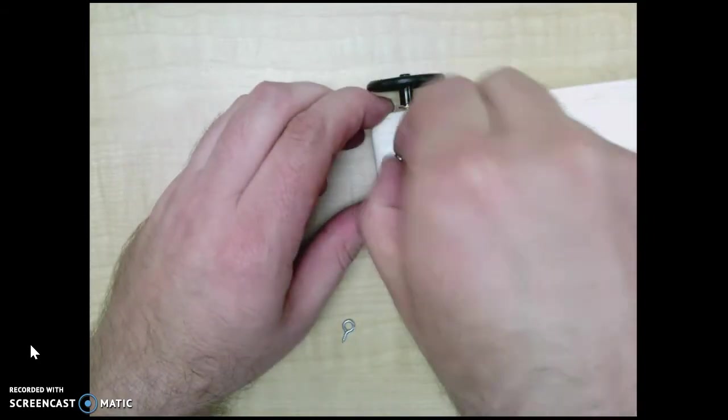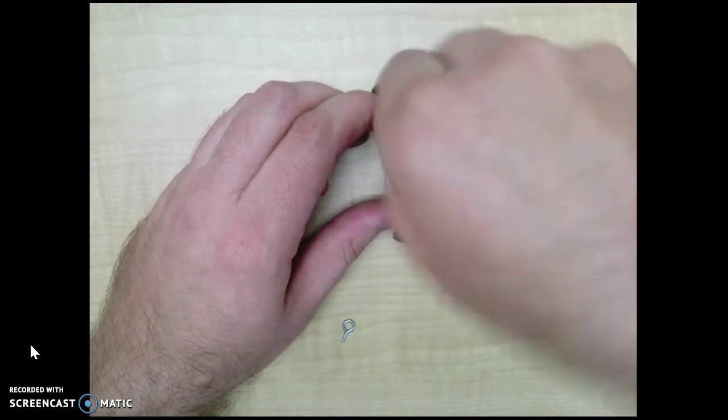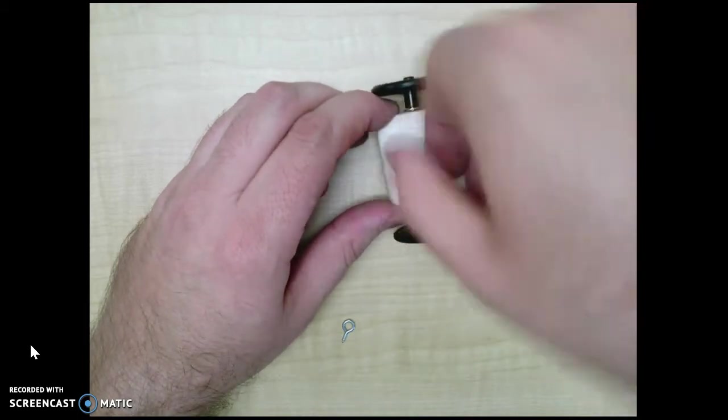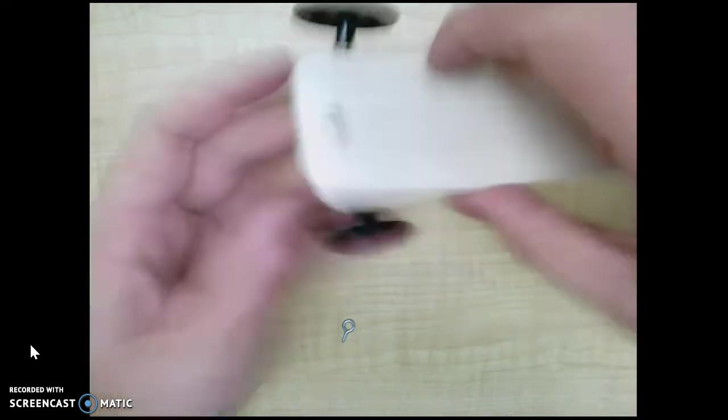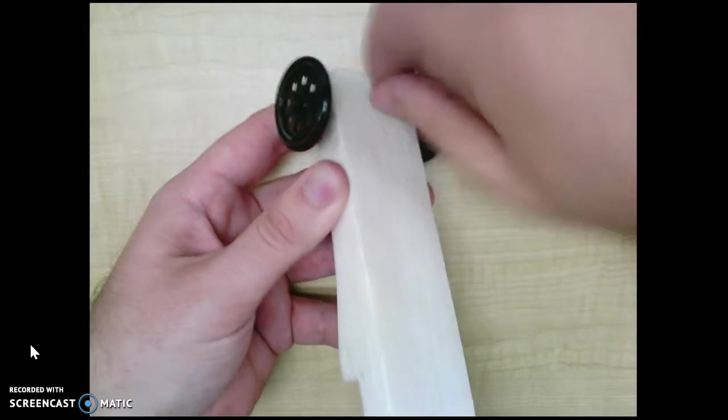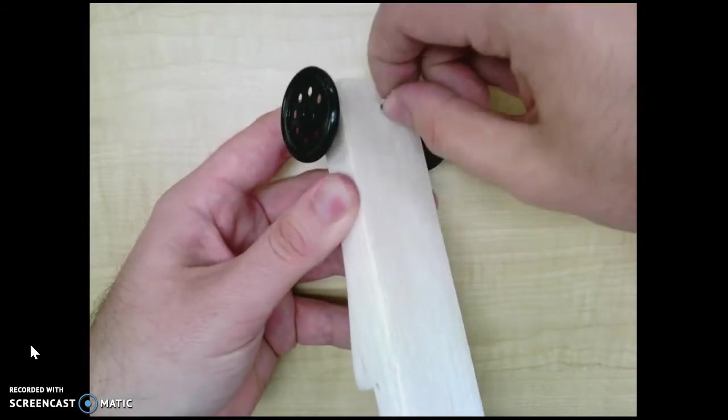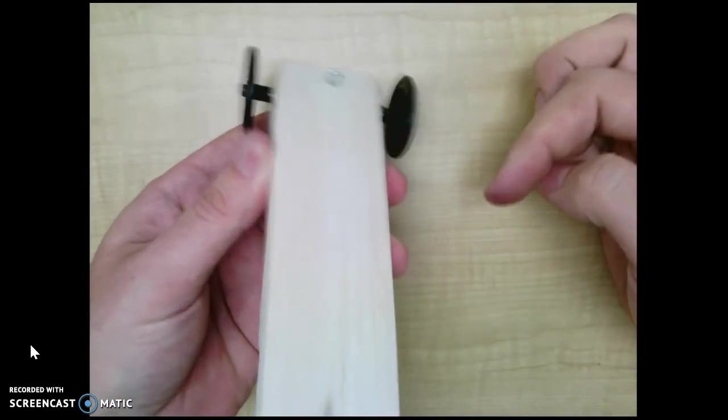And you're going to push and turn righty-tighty, lefty-loosey. So we're going to turn to the right and twist it all the way in until it's pretty snug with the bottom of our car. Like that. And our wheels are still running, so we're good.